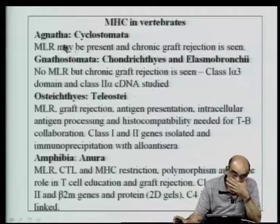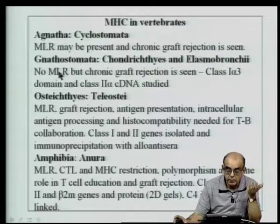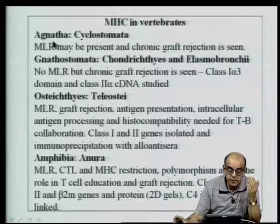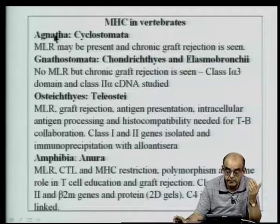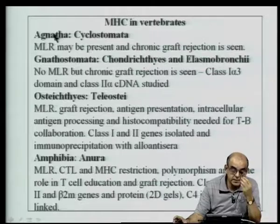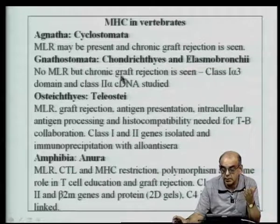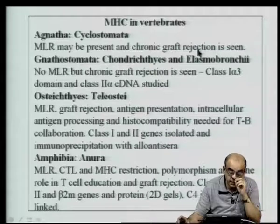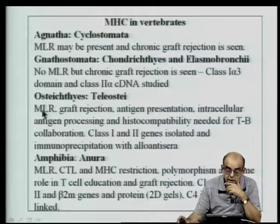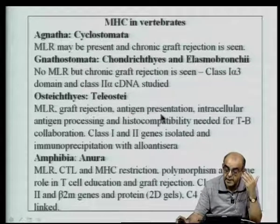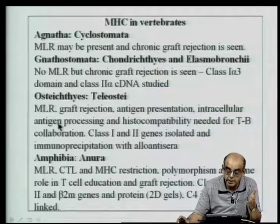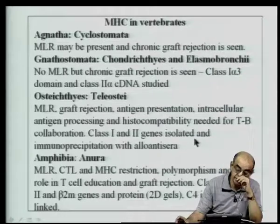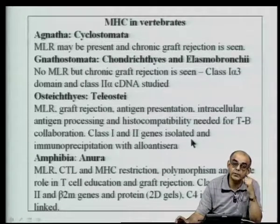Going further to MHC: MLR is present in many of these organisms, starting to show in agnata. Mixed lymphocyte reactions and chronic graft rejection are seen in chondrichthyes and elasmobranchii. In teleosts, you have MLR, graft rejection, antigen presentation, intracellular antigen processing, and class I and class II genes have been isolated by immunoprecipitation. Beta-2 microglobulin genes have been found by two-dimensional gel electrophoresis, and C4 complement component was MHC-linked in amphibia.